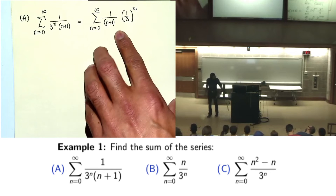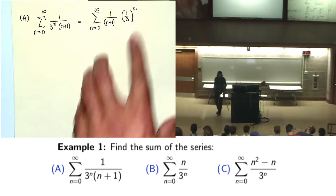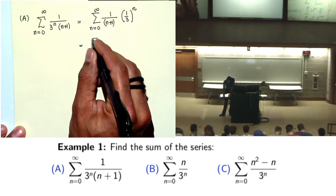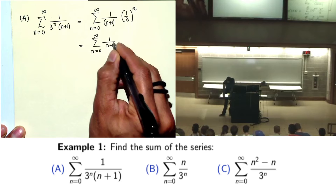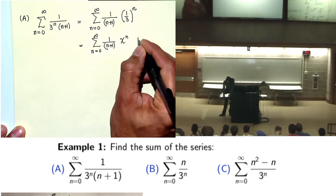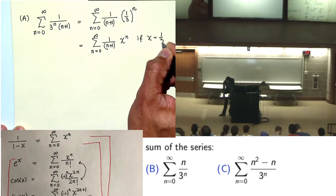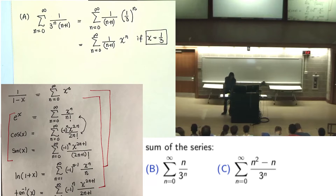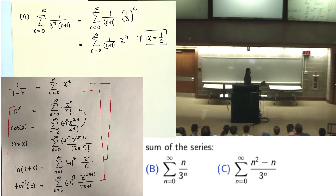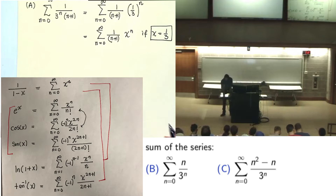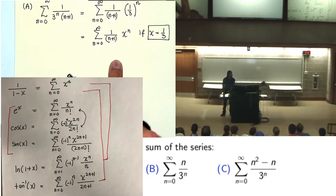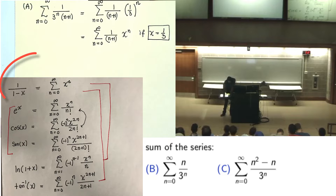This series is 1 over n plus 1 times one-third to the power n. If I replace one-third as a placeholder x, the form of this series is something like 1 over n plus 1 times x to the power n, if my x is one-third. First thing is we have to identify what kind of series we have. This series looks to me like x to the power n divided by n plus 1.